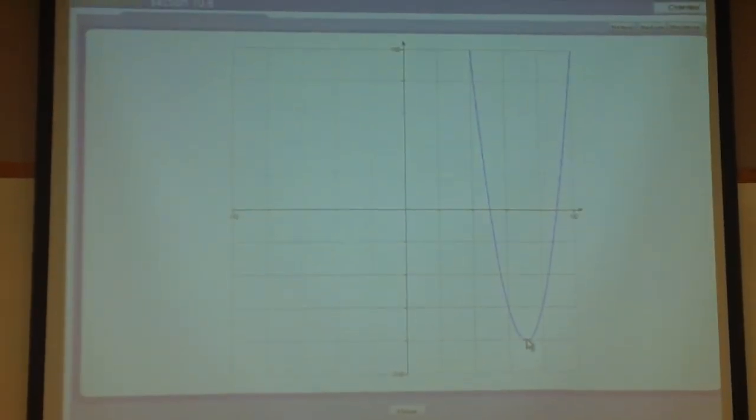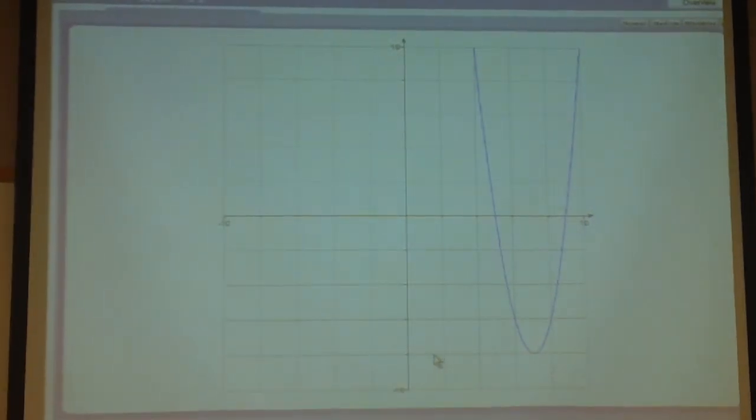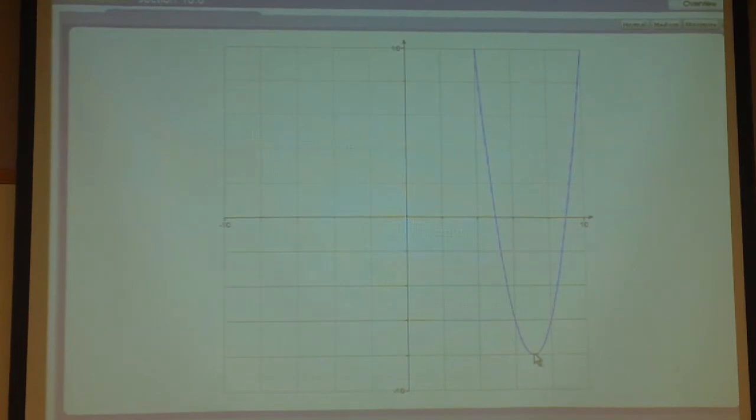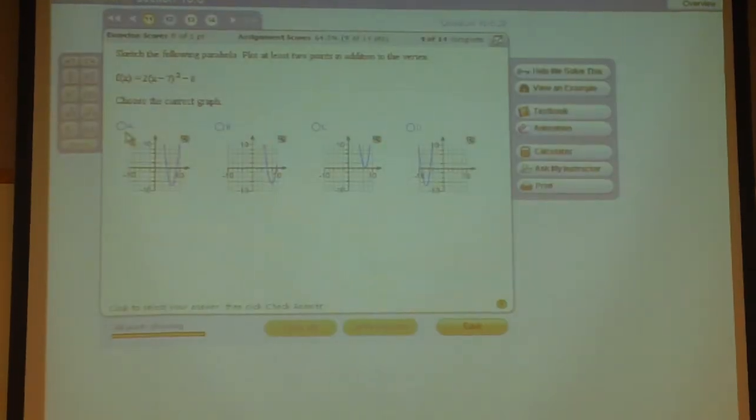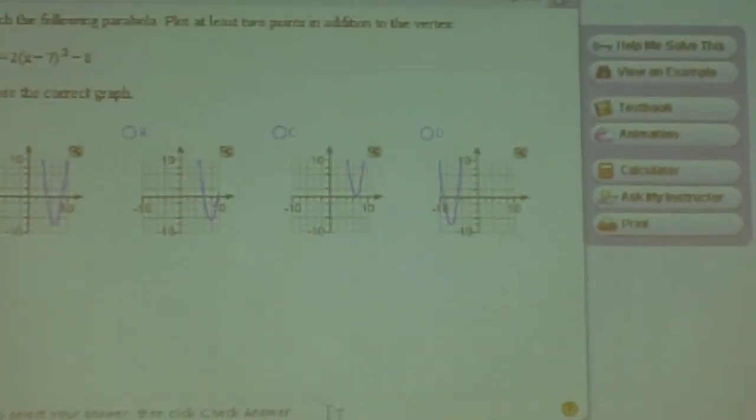And it lines up on the y-axis at negative 8. So this vertex has coordinates positive 7, comma negative 8, which means that graph A is the correct choice.